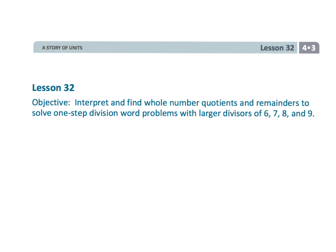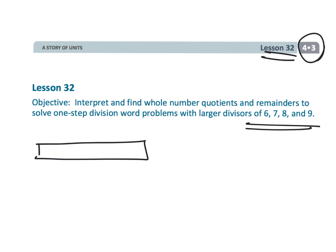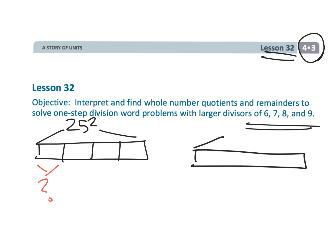That wraps up fourth grade module 3, lesson 32. Students are practicing division, but really the important thing is they're modeling what division looks like. There are two kinds: one where you know the number of parts and your job is to figure out the size of one part — this is called partitive division. The other is where you know the size of each group and the question is how many groups there are — this is called measurement division.